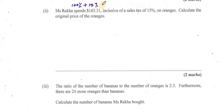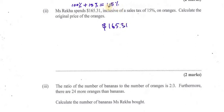So the total cost in terms of percentage is 115%. The $165.31 represents 115%. So if I want to find 1%, I'll divide by 115. Remember, $165.31 represents 115%, so dividing by 115 gives me 1%.